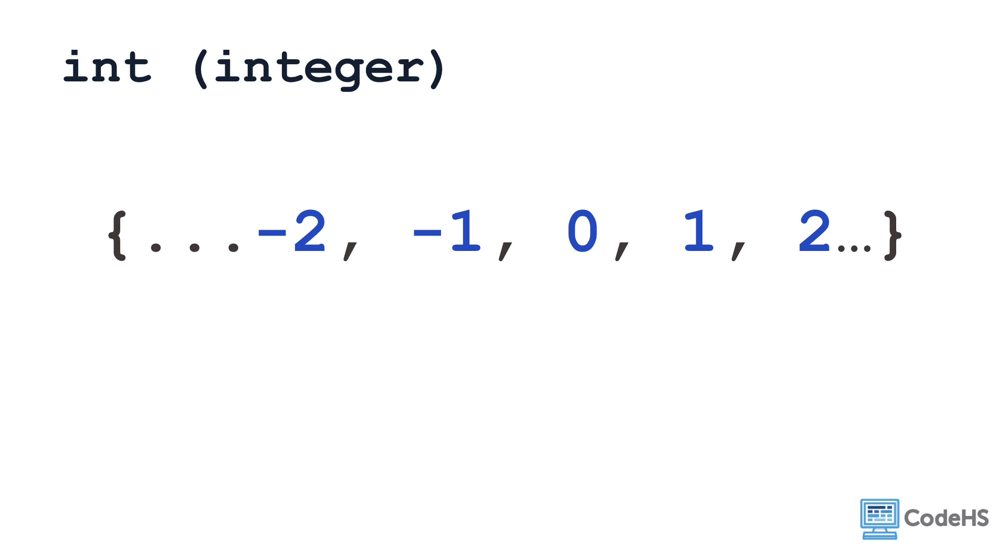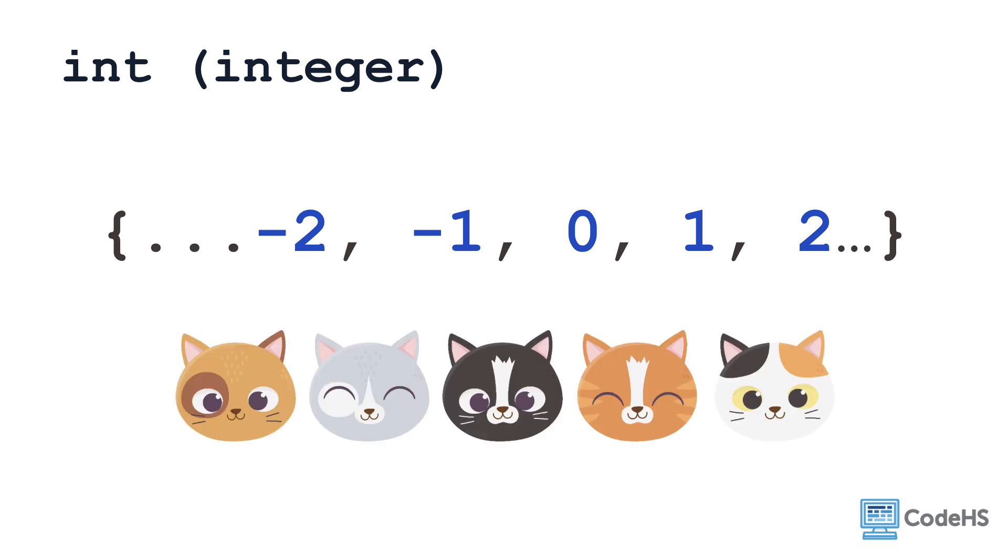The int data type is for integers. Integers are positive or negative whole numbers, such as negative 2, 0, and 1. As an example, you would use the int data type to store the number of cats at the pet store.